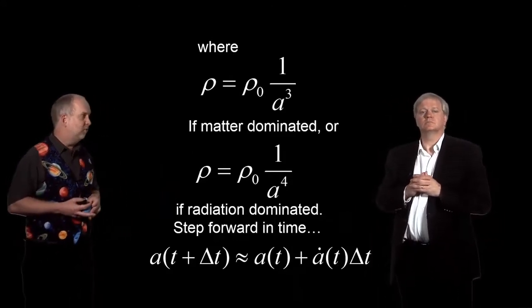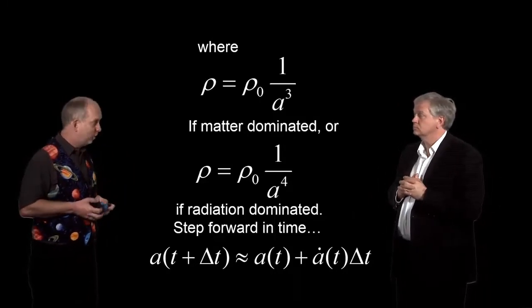So we've got density goes as density to date, either 1 over A cubed or 1 over A to the fourth, depending whether we're radiation, relativistic stuff or matter dominated. Now the method we're going to use here is the simplest possible numerical method, which is called Euler's method.